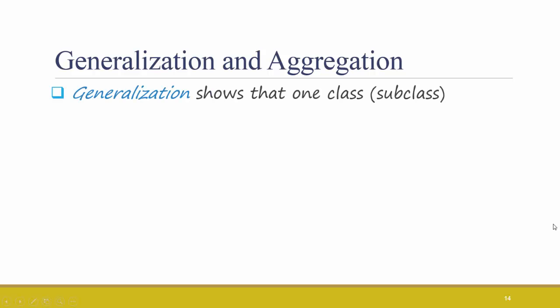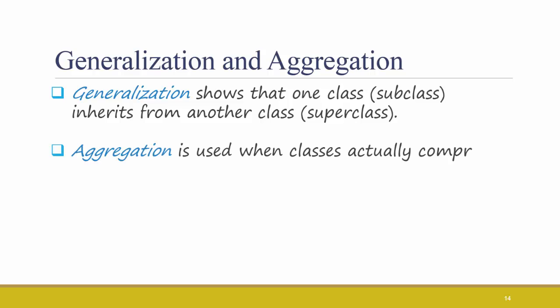Generalization on a class diagram shows that one class, a subclass, inherits from another class, a superclass. Aggregation is used when classes actually comprise other classes. So we talked about generalization in ER diagrams in ISDS 402, but we did not talk about aggregation. For example, a car could be the aggregate of an engine, a wheel, seats, seat belts, radiator, and every other piece of a car.